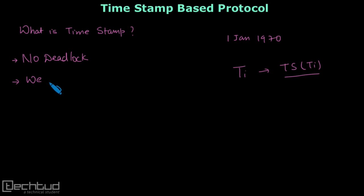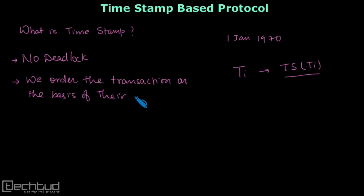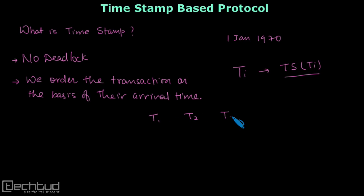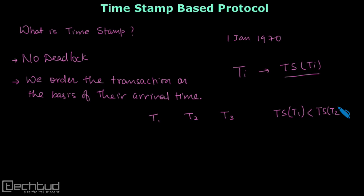We order transactions such that if transaction T1 has come first, then T2, then T3, then the timestamp of T1 will be less than the timestamp of T2, which will be less than the timestamp of T3.